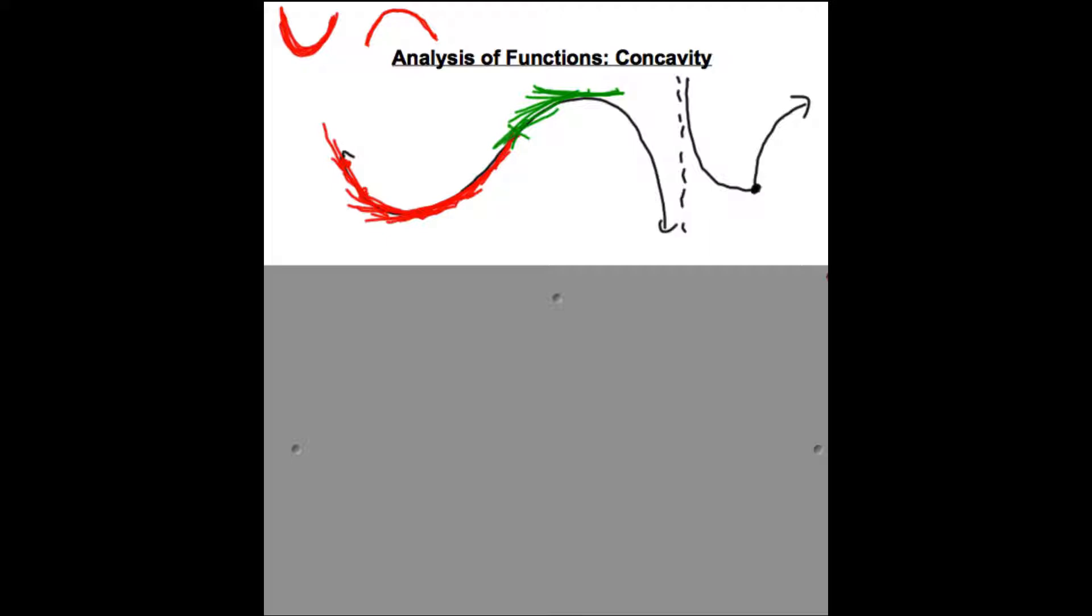So just to go back, if the slopes are increasing, if the derivatives are increasing, it's concave up. If the derivatives, the slopes are decreasing, it's concave down. That is the central determiner.